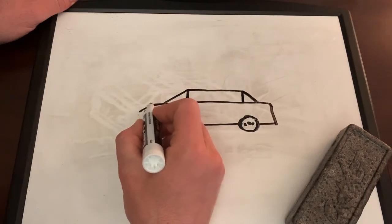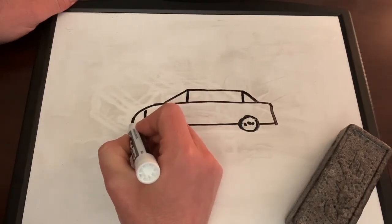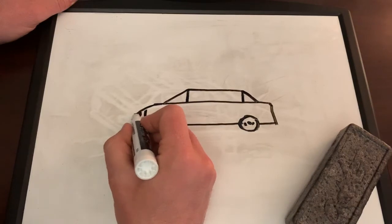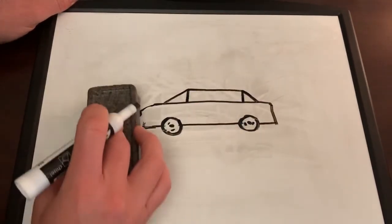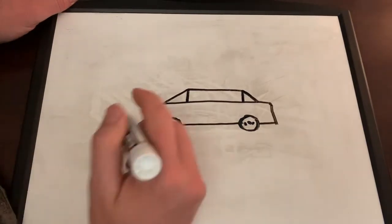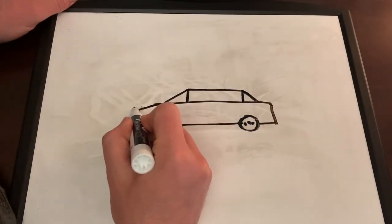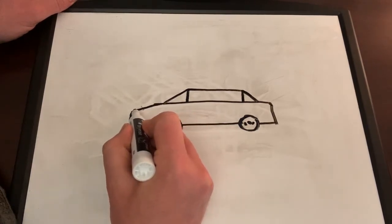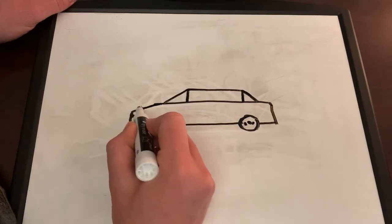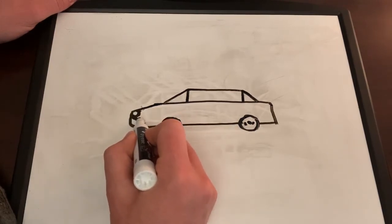And then here's where the fun part begins. So you have the base of your car already. Now you can draw different kinds of fronts or hoods and grills, however you want it. You can try different things. You can see I tried one and I didn't like it, so I'm going to try something else, make it a little more racy.